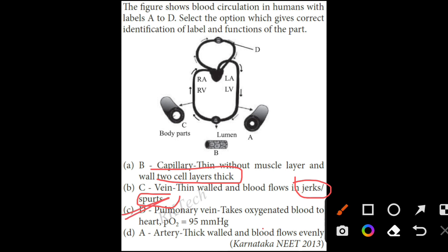Level A is artery, and blood flows continuously through it. So the answer will be Option C, which is correct.